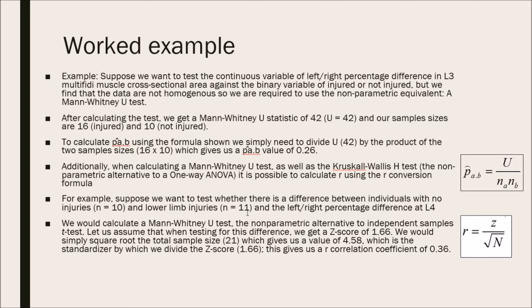We would simply square root the total sample size, 21, because 11 plus 10 equals 21, which gives us a value of 4.58, which is the standardizer by which we divide the Z-score of 1.66 by. This gives us an r correlation coefficient of 0.36.